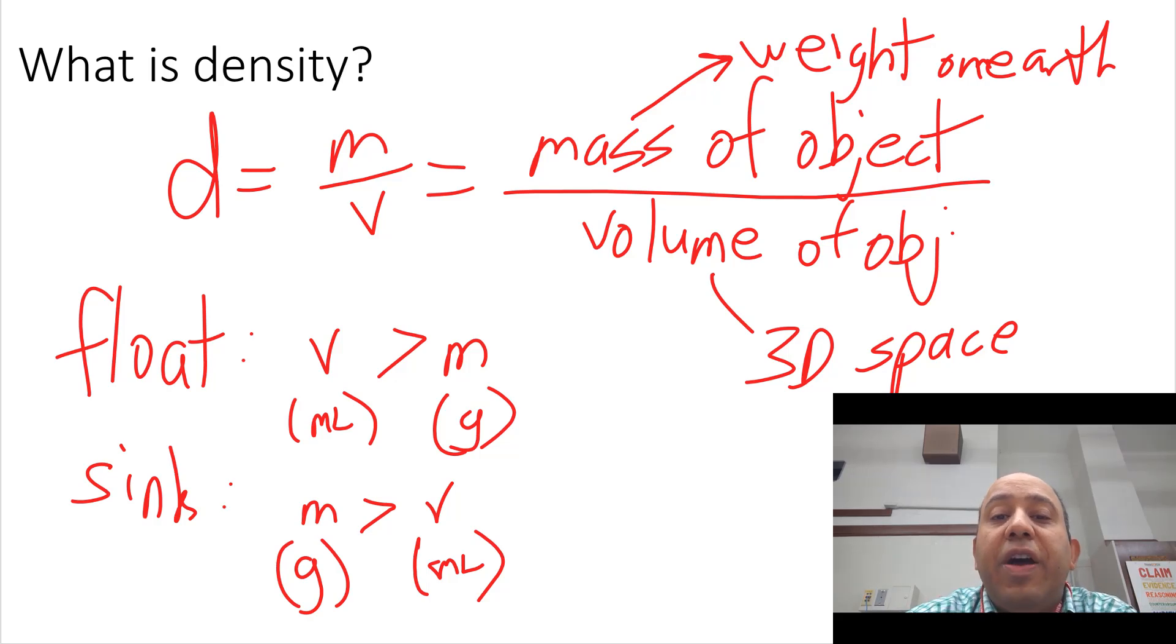That means that if you divide mass by volume in things that float, you'll get a number smaller than one. If you do mass divided by volume for items that sink, you'll notice that the density is greater than one.